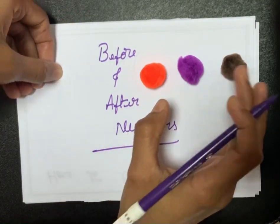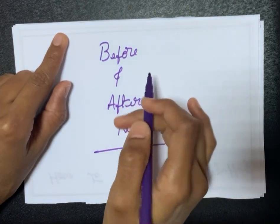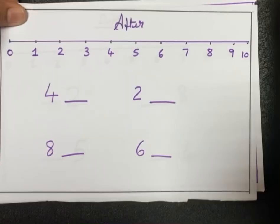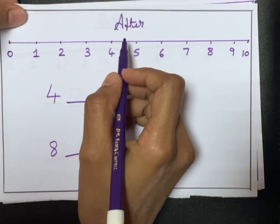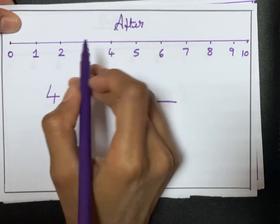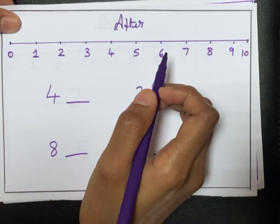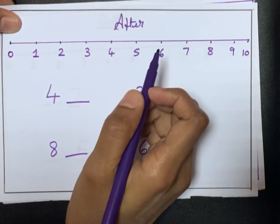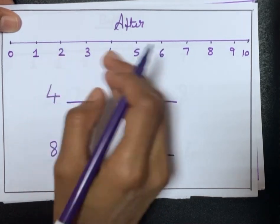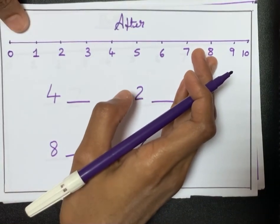Once your child understands the meaning of before and after, you can teach them before and after numbers. While teaching, first teach the concept of 'after' because the child has already learned the flow of 0 to 10 numbers, so it would be easier for them. Draw a number scale from 0 to 10 in the beginning.